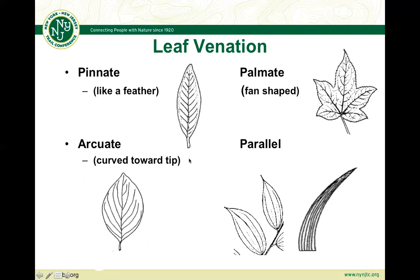We can also refer to leaf venation — the pattern of main veins in leaves. Pinnate venation looks like a feather. Palmate is fan-shaped, with veins going in all different directions — like a typical maple or oak. Arcuate means the veins are curved toward the tip. Grasses may have parallel venation with veins running parallel to one another.